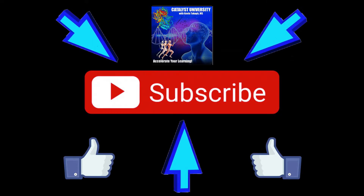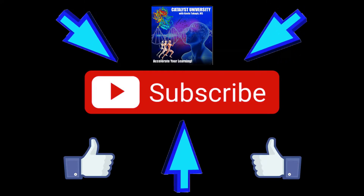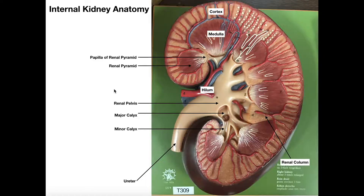Welcome back to Anatomy & Physiology on Catalyst University. My name is Kevin Tokov. In this video, we're going to discuss the internal kidney anatomy and ultimately how we get urine from the kidney into the bladder, and then we'll talk about micturition, which is urination, in a separate video.